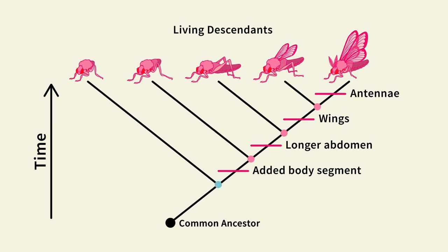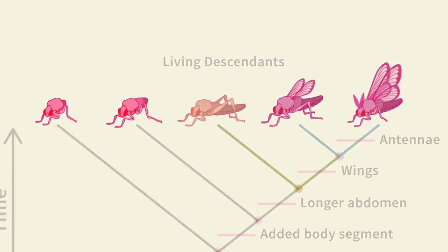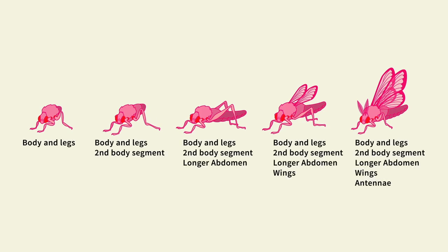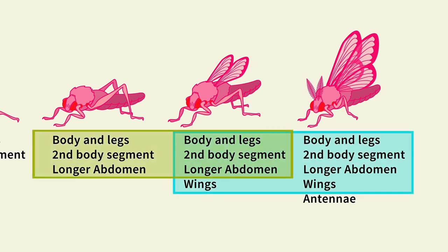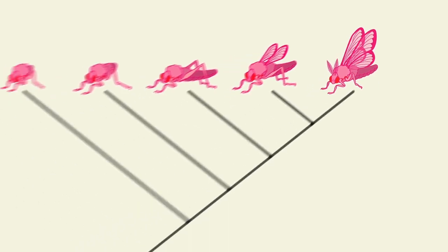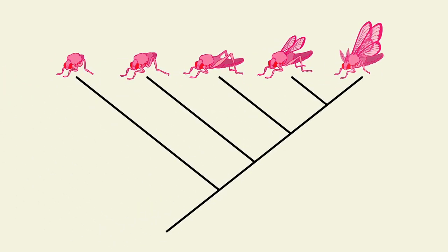So this common ancestor is shared by all of the creatures on the tree, and this common ancestor is shared only by the ones with wings. Connections to common ancestors can tell you which creatures are more closely related. These two creatures share an ancestor that lived more recently than the ancestor they share with this creature. Another way to look at relatedness is to look at the number of traits that the creatures have in common. One thing that's really important to know about trees is that the order of organisms across the top doesn't tell you anything — the key information is in the branch points.